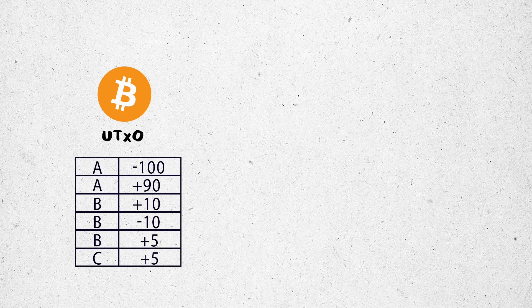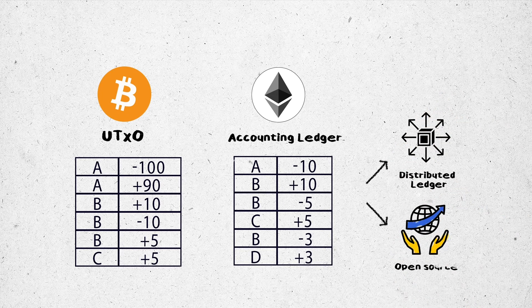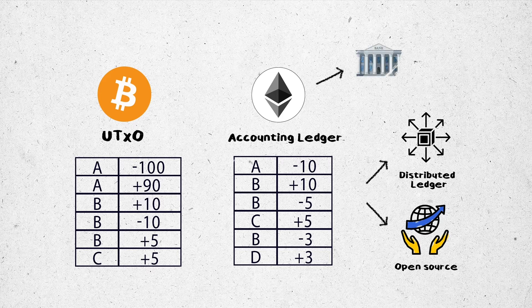Unlike Bitcoin, which uses the UTXO model, Ethereum chose an accounting ledger model. In order to follow the balance fluctuations in the global status and open states of the account, the account balance is checked to assure that it will be larger than or equal to the money paid for the transaction. The accounting model demonstrates property under the form of account balances, similar to a bank account.